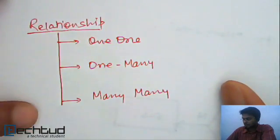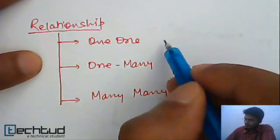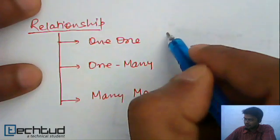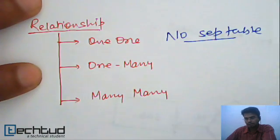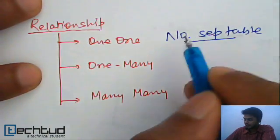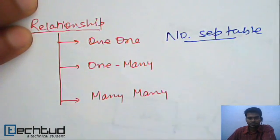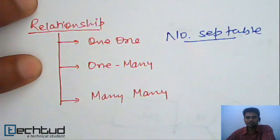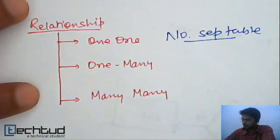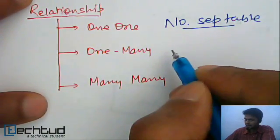Now the most important part: relationships. If the relationship is one-to-one (1:1), we do not need to create any separate table. If the relationship has an attribute — like the starting date attribute in the department-HOD relationship — that attribute can be moved to either side of the relationship.